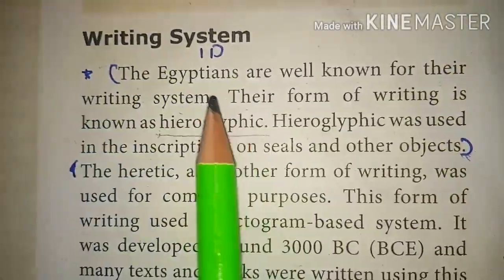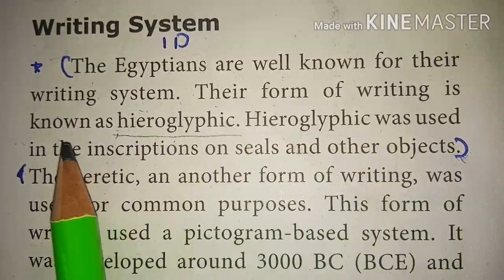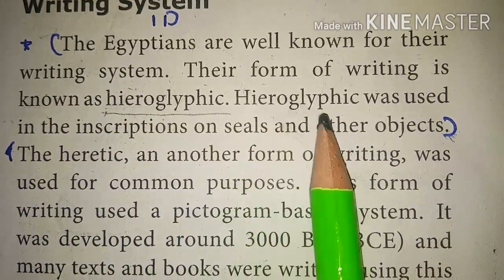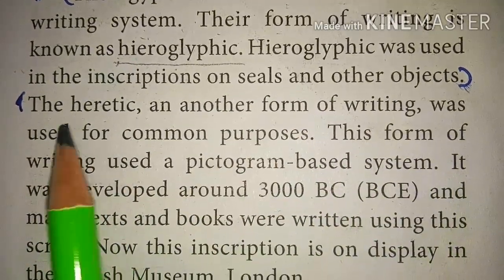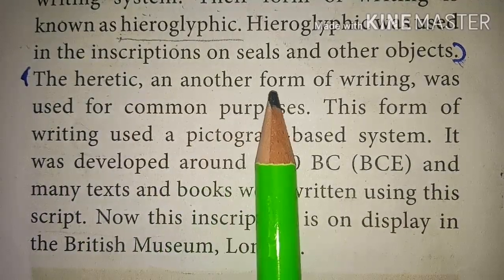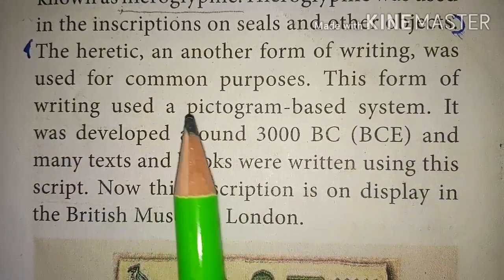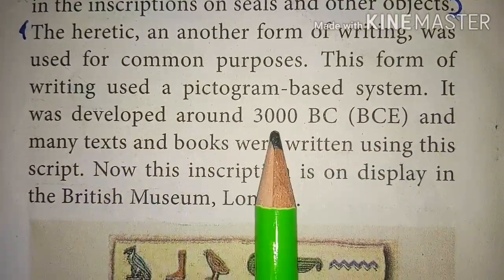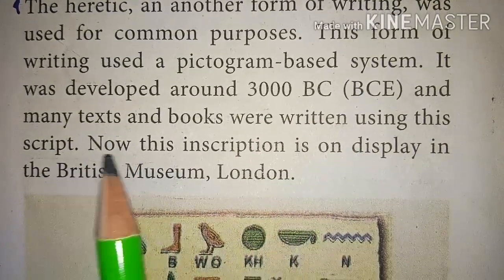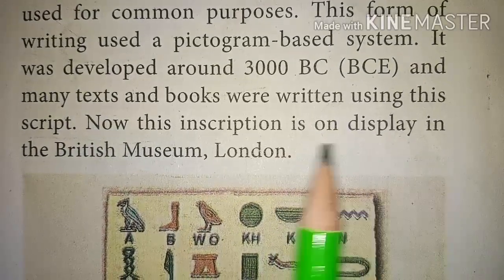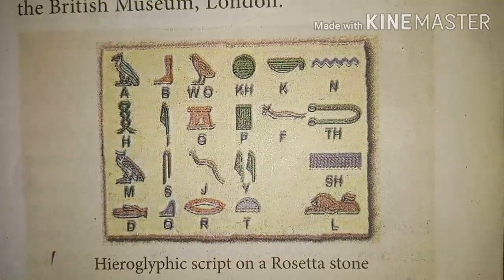The writing system of the Egyptians: The Egyptians are well known for their writing system. Their form of writing is known as hieroglyphics. Hieroglyphics were used in inscriptions on seals and other objects. The hieratic script was another form of writing used for common purposes. This form used a pictogram-based system. It was developed around 3000 BC, and many texts and books were written using this script. This inscription is on display in the British Museum, London. Look at the hieroglyphic script on the Rosetta Stone.